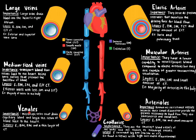Next are venules, which are microscopic veins that drain capillary blood and begin the return of blood back to the heart. Their layers consist of endothelium surrounded by a basement membrane, smooth muscle, and a thin layer of connective tissue.